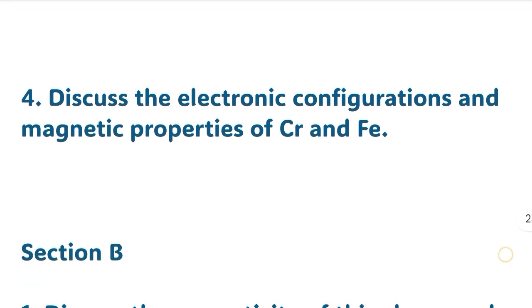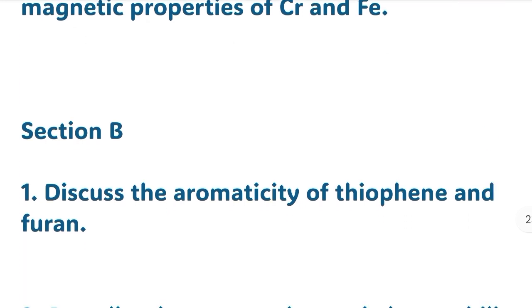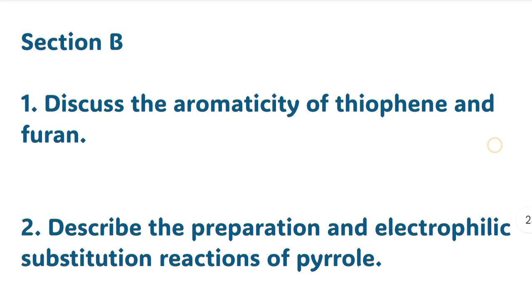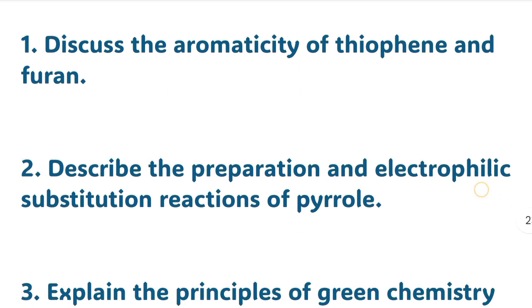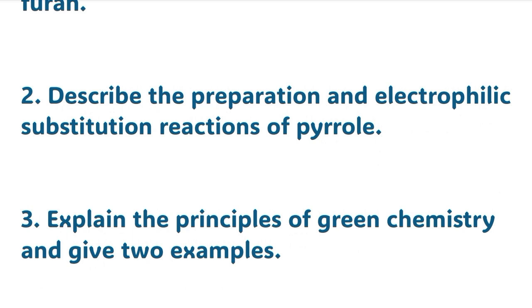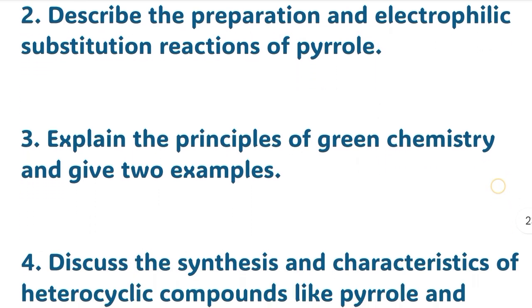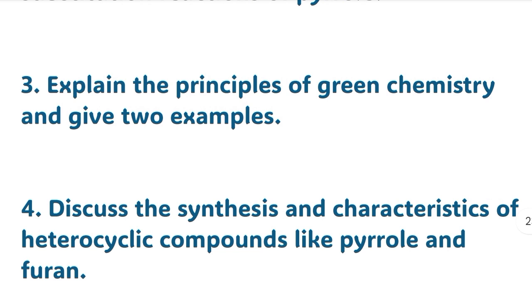Section B: First, discuss the aromaticity of thiophene and furan. Second: Describe the preparation and electrophilic substitution reactions of pyrrole. Third: Explain the principles of green chemistry and give two examples. Fourth: Discuss the synthesis and characteristics of heterocyclic compounds like pyrrole and furan.